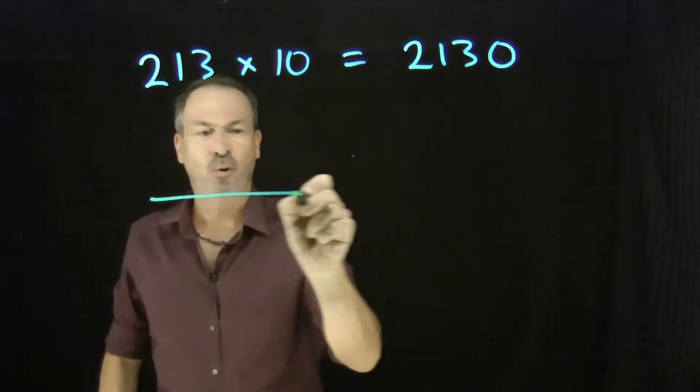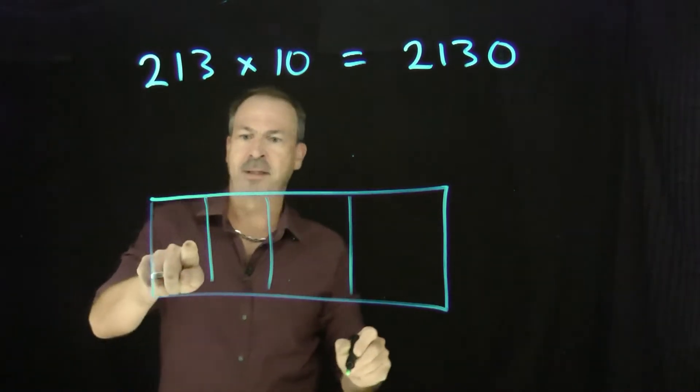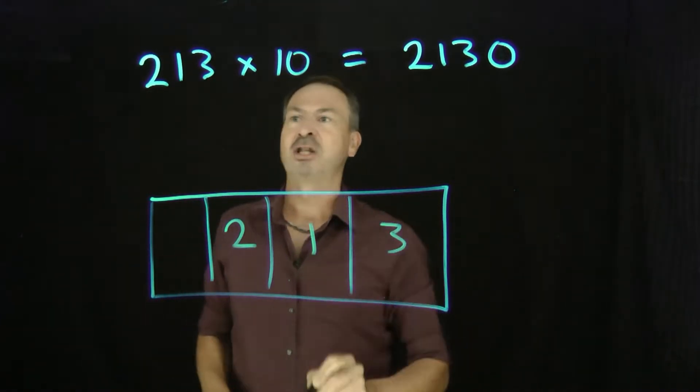So let's take this number 213. Let me draw a little picture for it. I guess I drew too many boxes. This is thousands, none, but I've got two hundreds, one ten, and three. That's 213.